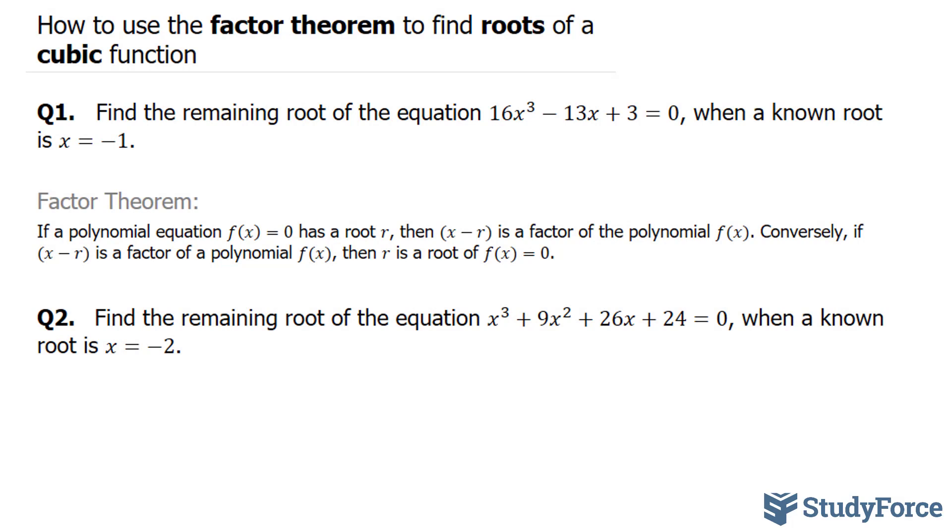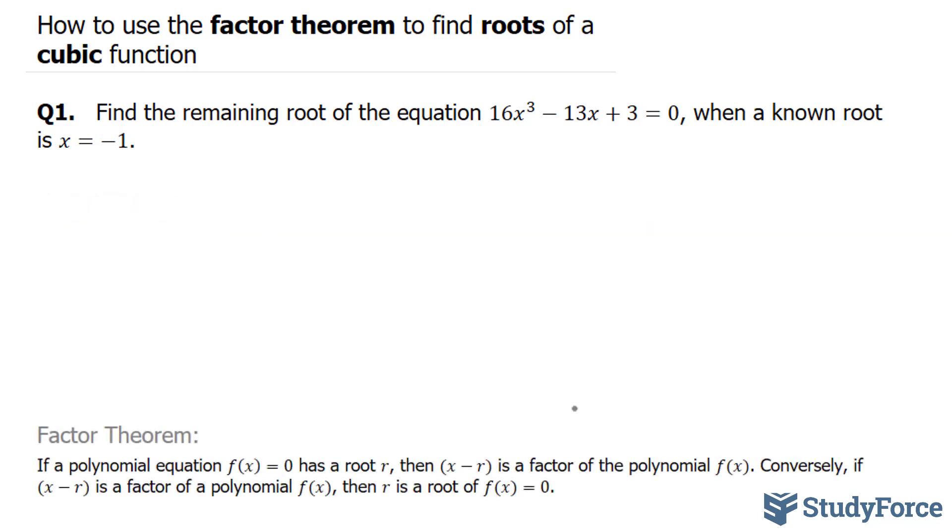To do this, we have to refer to the Factor Theorem, which states that if a polynomial equation f(x) = 0 has a root r, and in our case it's -1, then (x - r) is a factor of the polynomial f(x). To answer this question correctly, what we need to do is rewrite this root as x - r, where r = -1, this becomes (x + 1), and we need to take this binomial and divide it by this polynomial.